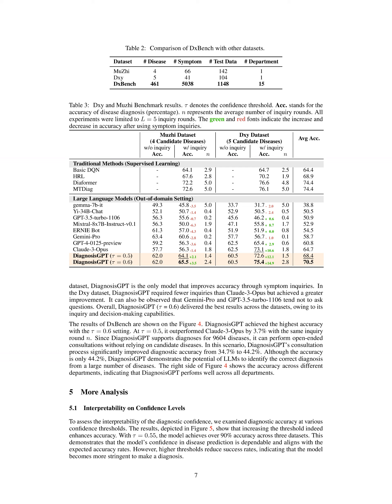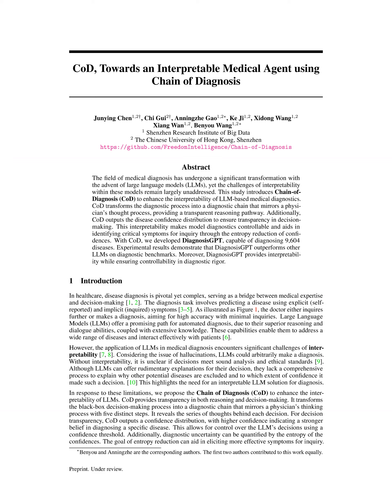While in the DXY dataset, it required fewer inquiries than other models like CLAWD-3 Opus, achieving a greater improvement. Additionally, the model's accuracy was assessed at various confidence thresholds, revealing that with a threshold of 0.55, it achieved over 90% accuracy across three datasets. Overall, these metrics highlighted Diagnosis GPT's superior inquiry and decision-making capabilities, confirming its reliability in diagnosing a wide range of diseases.